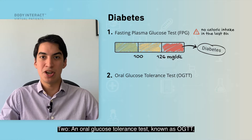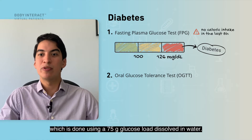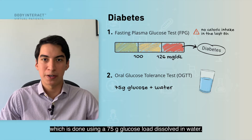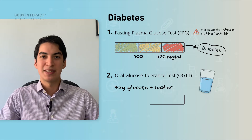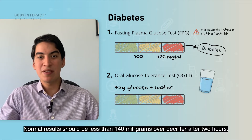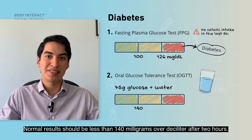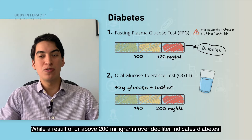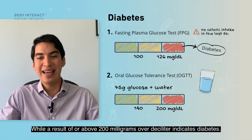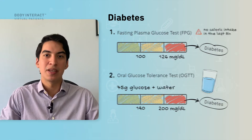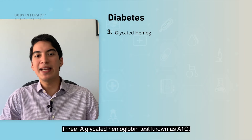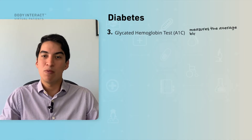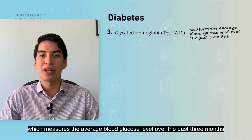Second, an oral glucose tolerance test, known as OGTT, which is done using 75 grams of glucose dissolved in water. Normal results should be less than 140 mg/dL after two hours, while a result at or above 200 mg/dL indicates diabetes. Third, a glycated hemoglobin test, known as A1C, which measures the average blood glucose level over the past three months.